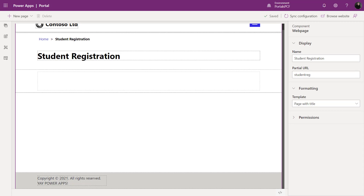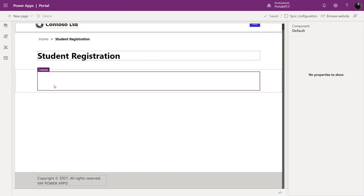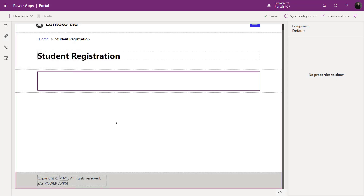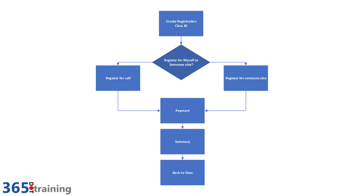Now that we understand basic forms, let's look at advanced forms. Back in the portal studio I'll add a component — however, there's no advanced form component in the studio at this time, only the basic form component. Before creating an advanced form (formerly web form), it's best practice to plan out your steps, because advanced forms let you go through a series of steps including conditional statements, and you need to plan ahead carefully.